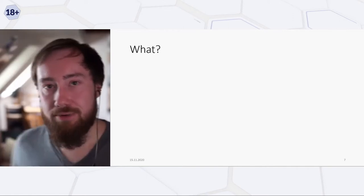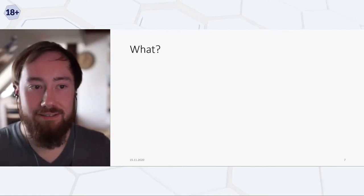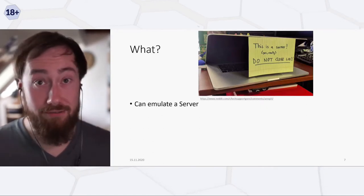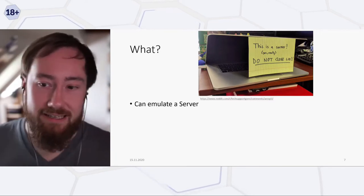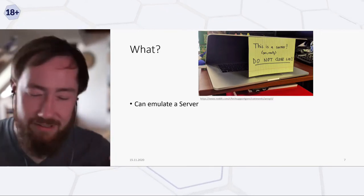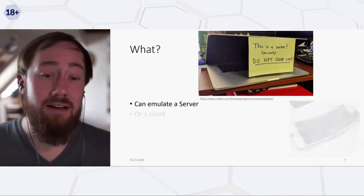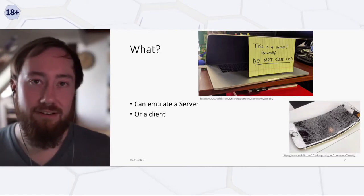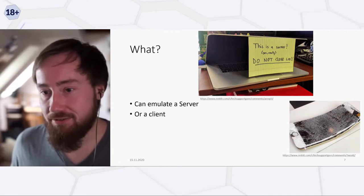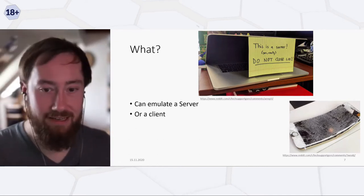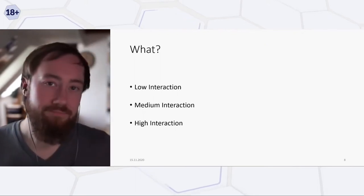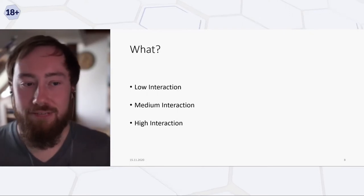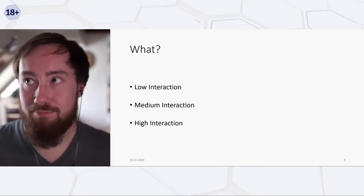So what are honeypots? Generally they emulate things — the majority emulate servers such as SSH servers, MongoDB servers, IoT devices, or mail servers. A lesser-known variant is client honeypots, for example browsers that try to find drive-by downloads. Generally, honeypots can be split into three groups: low, medium, and high interaction honeypots, each with their own benefits.